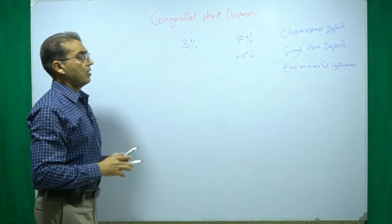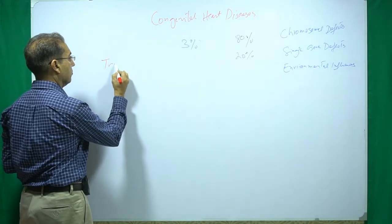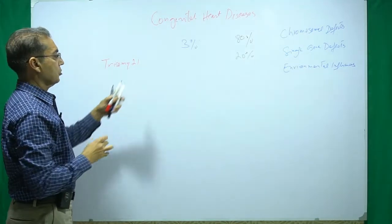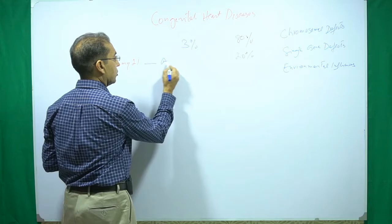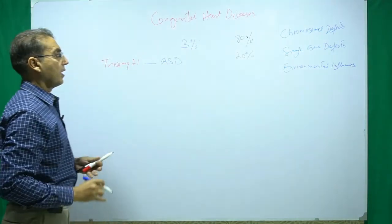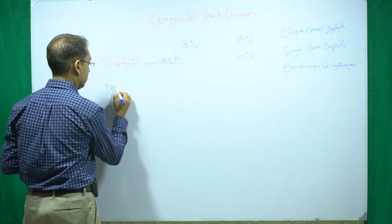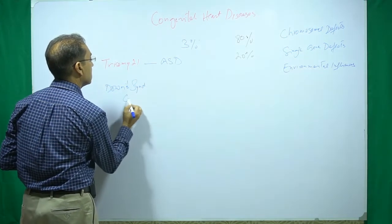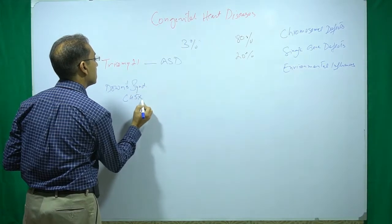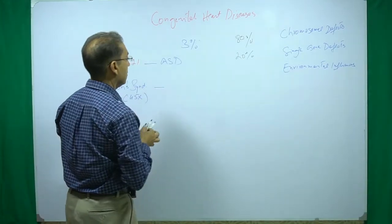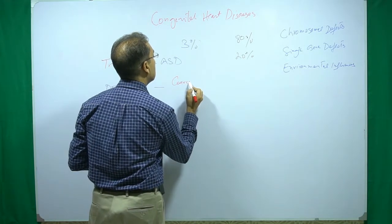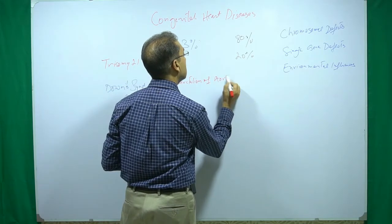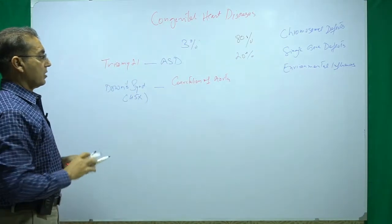The classical example of a chromosomal defect is trisomy 21, which is associated with ostium primum type of ASD. Another example is Turner syndrome — that is 45X — which is associated with coarctation of the aorta.